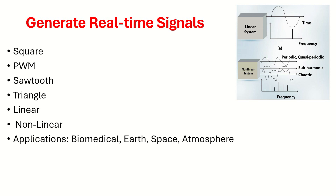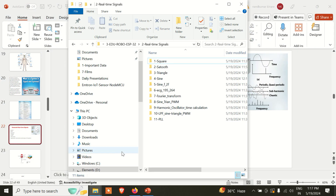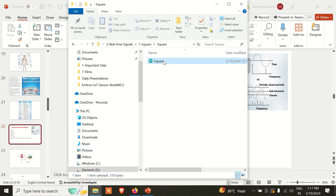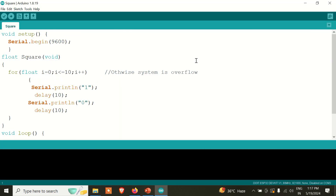You can understand there are n number of signals and systems. Just for the basics, to understand what is real time, what is mathematically representing a signal, and how they behave when using different data types. To begin with, let's see the square wave.